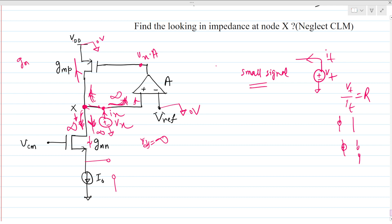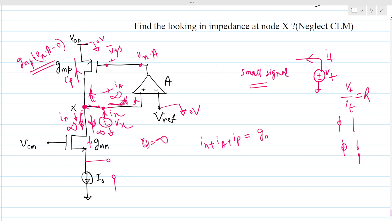The small signal current flowing through this PMOS path is gmp times Vgs. The gate voltage is A times Vx and the source voltage is zero, so the small signal current through this path — call it Ip — equals gmp times A times Vx. The other two currents Ia and In are zero since those branches have infinite impedance.